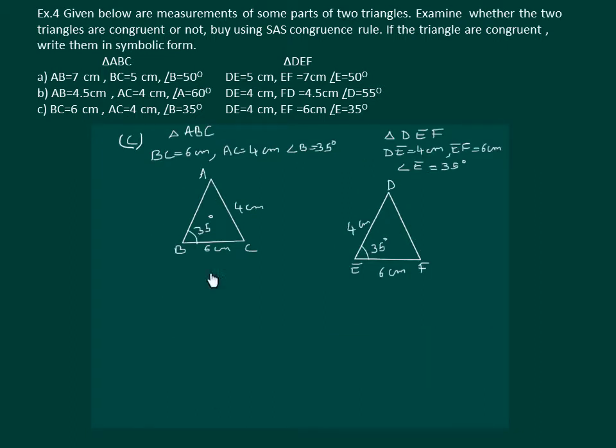We have drawn a rough figure of triangle ABC with the given dimensions and triangle DEF with the given dimensions in the question. Clearly from the figure, BC = EF and AC = DF.